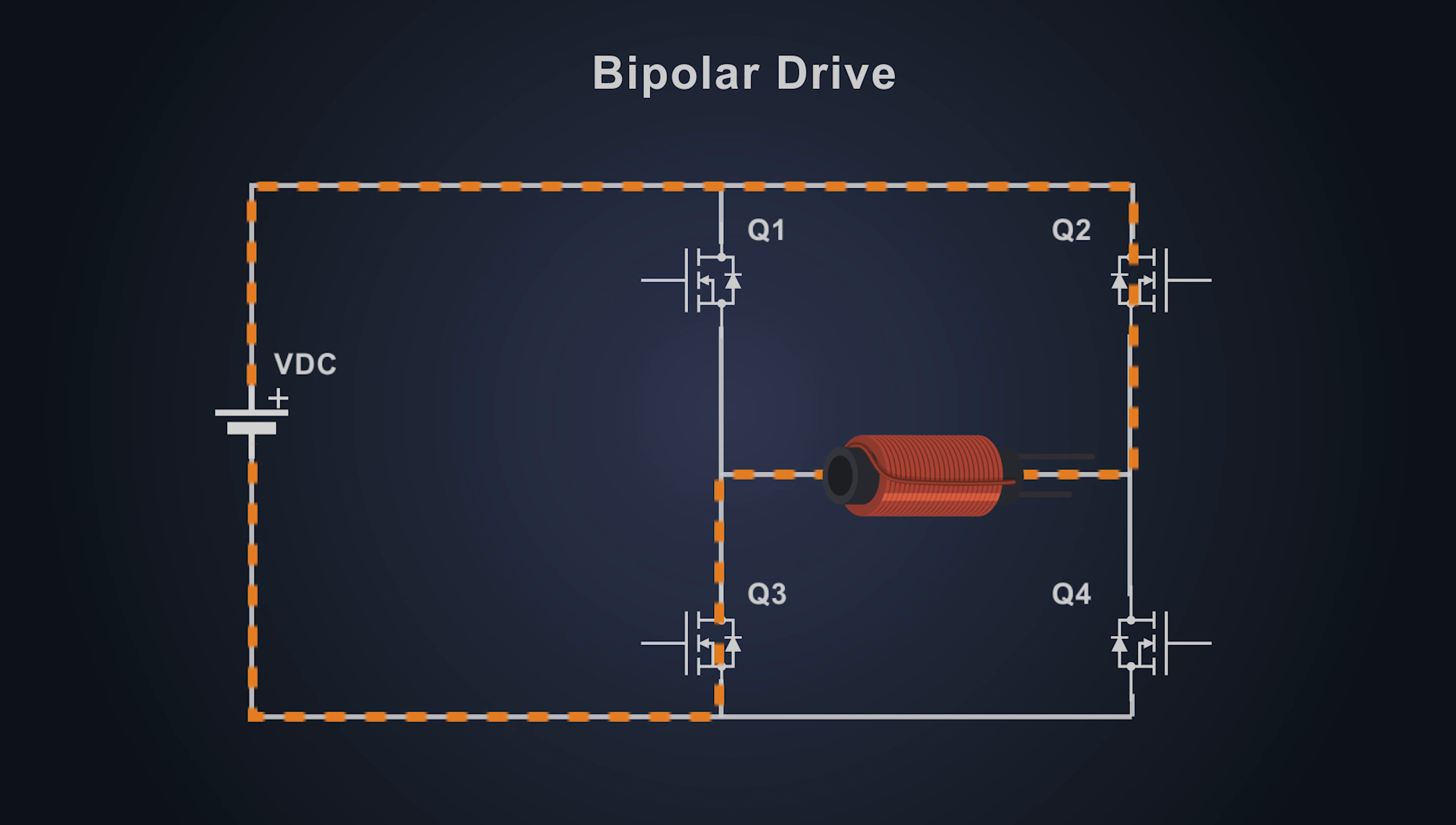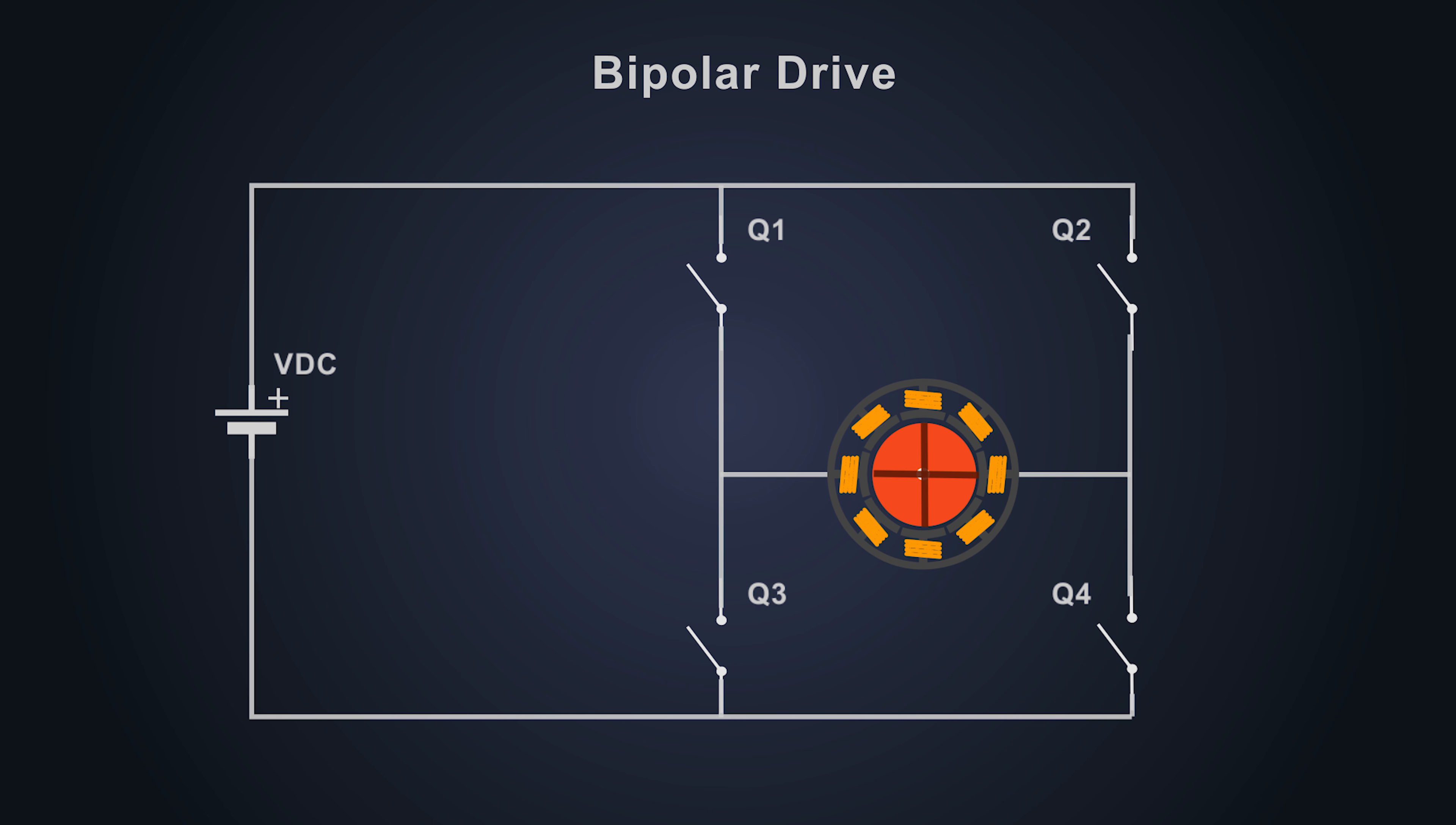Whenever there is a change in the current, this motor induces flyback voltage or back EMF. So if there is transition between forward motoring to reverse motoring, a dead time must be introduced where all of the MOSFETs are turned off, so that the flyback voltage generated in the motor flows back to the supply via body diode of the MOSFET.